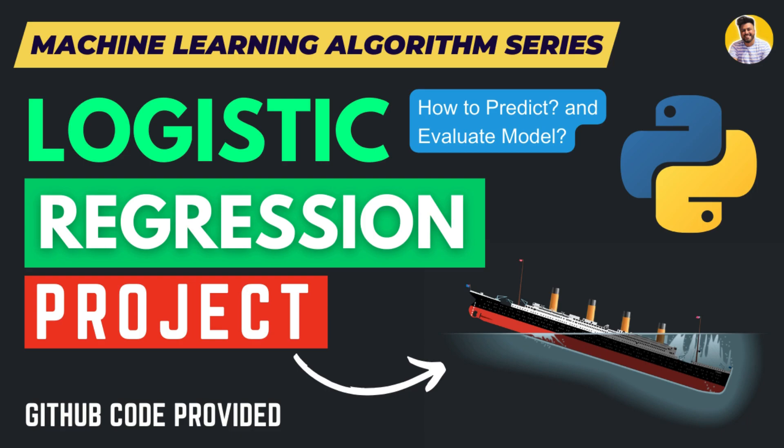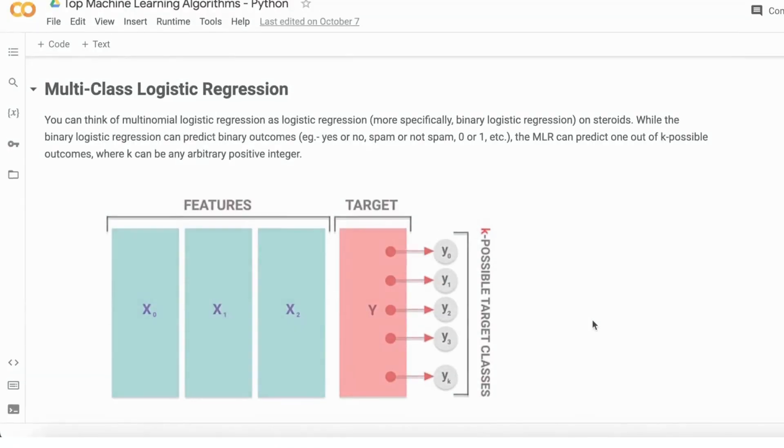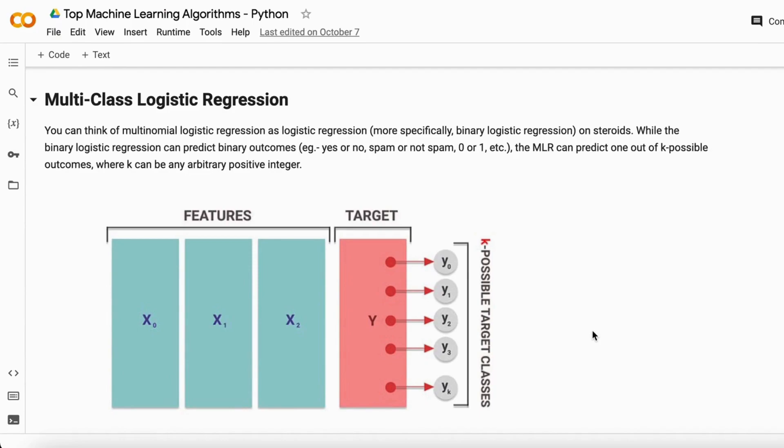In this video, let's learn about multi-class logistic regression. Multi-class logistic regression is the same as logistic regression but with more functionality. While binary logistic regression can only predict binary outcomes like yes or no, spam or not spam, zero or one, multi-class logistic regression can give you k number of possible outcomes. If your target variable has k number of labels, it can predict the probability of each label.